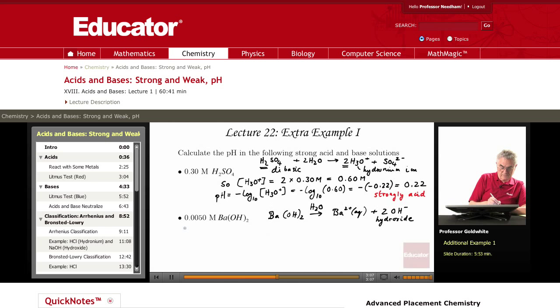So, the concentration of hydroxide ion equals 2 times 0.0050 molar equals 1.0 times 10 to the negative 2 molar. Now let's calculate, not the pH initially, but the pOH.